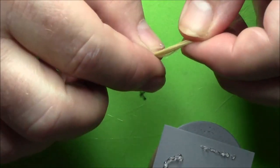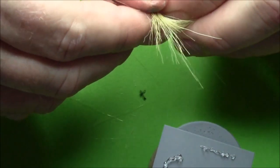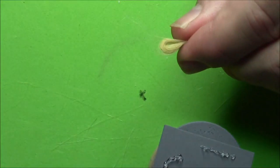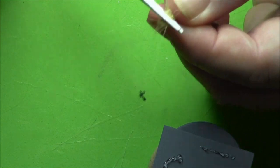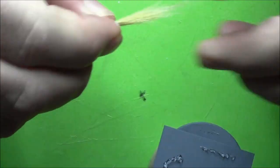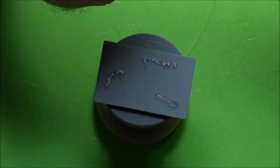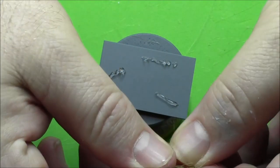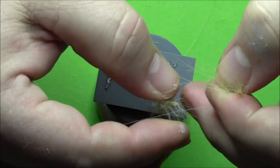Here we'll loop the grass and cut it in the middle of the loop. That way we're not wasting as much grass. Then just cut the end evenly and take about a third at a time. Spread it between your fingers and then just put it down and press it down firmly into the superglue.